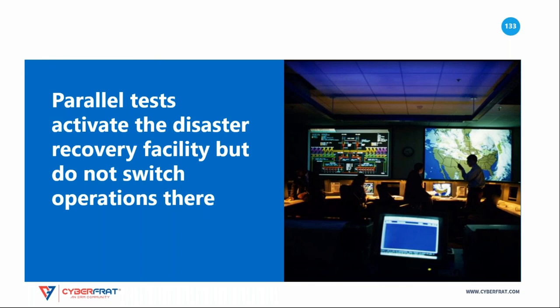The final test, the full interruption test, is the most effective type of disaster recovery testing, but it is also the most disruptive to normal operations. The business simulates a disaster by actually shutting down the primary site and attempting to operate out of the alternate facility. This type of test will highlight any deficiencies in the plan, but may also have an adverse effect on the business. For this reason, full interruption tests are rare in practice.